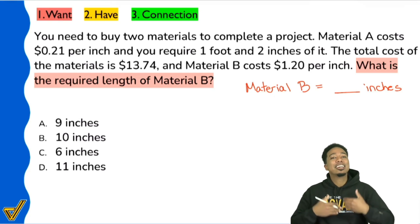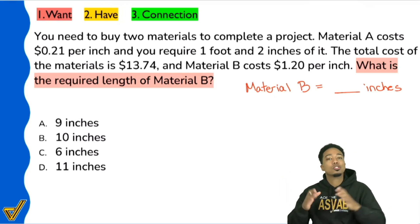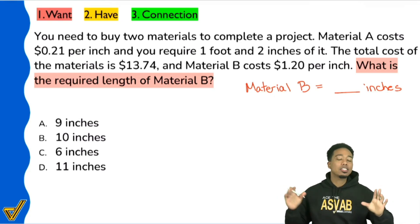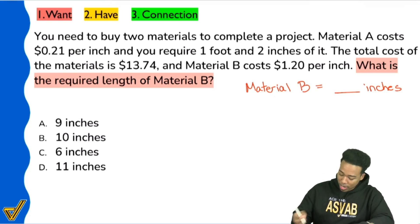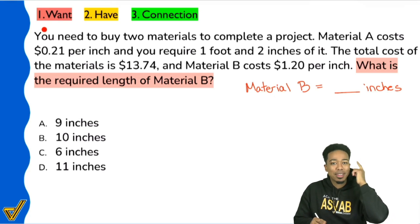The next thing I'll do now is, what information do I have? I just asked what do I want, which is the question itself. Now, what do I have? I know that I'm looking for material B, its length. So let's read and take note of any information that has anything to do with material B so we can see what we can do. So we'll start reading from the beginning now. All I care about is material B. You need to buy two materials to complete a project. Material A costs 21 cents per inch and you require one foot and two inches of it. So we have the price per inch and we have how much of it we need. Let's just take a moment, take a quick breath and understand the overarching theme here.